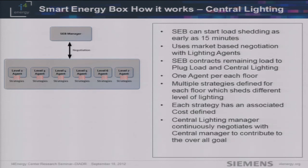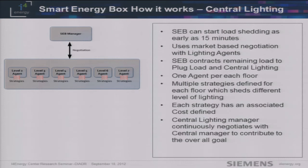For central lighting, the manager inside the Smart Energy Box uses an agent-based negotiation adaptive approach. There are agents defined for each level of lighting in this building — six agents in total. Each level has multiple strategies defined; for example, if the total power is 50 kilowatts, strategies might offer shedding of 20, 30, or 35 kilowatts — the maximum that can be shed without turning off all lights. During demand response, agents communicate with each other and promise how much they can shed, trying to collectively achieve the goal.